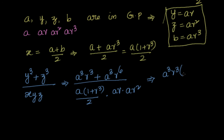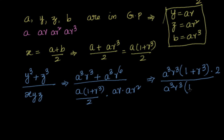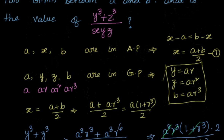In the numerator, I can take a³r³ common, leaving (1 + r³). The 2 from the denominator comes to the numerator. In the denominator we have a times a times a — that's a³ — and r times r² is r³, multiplied by (1 + r³). Everything cancels: a³ cancels, r³ cancels, and (1 + r³) cancels. We are left with the solution equal to 2.